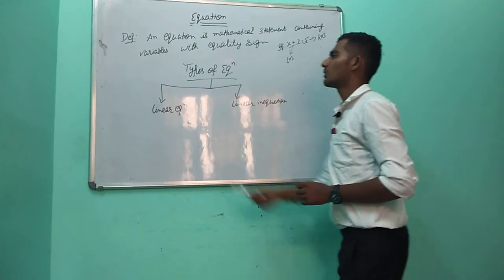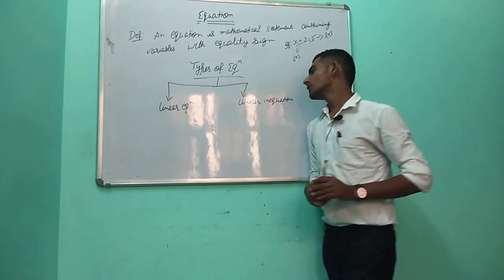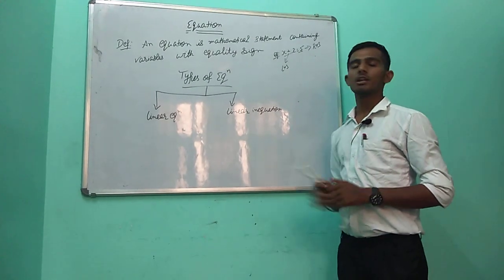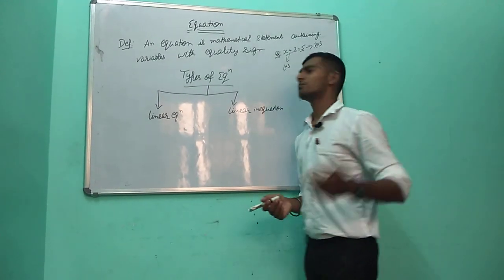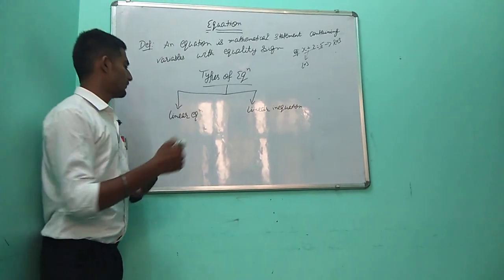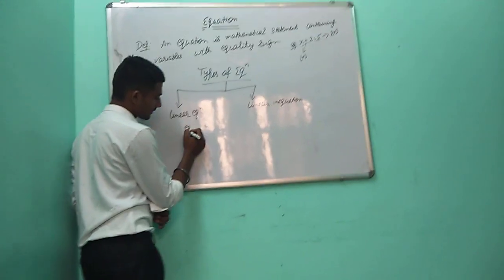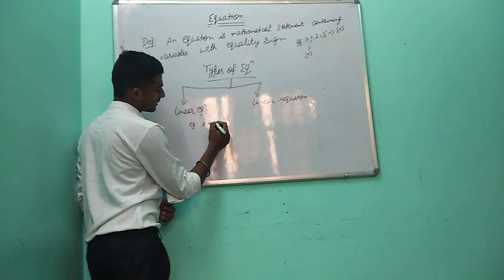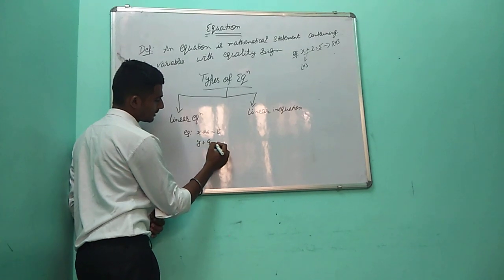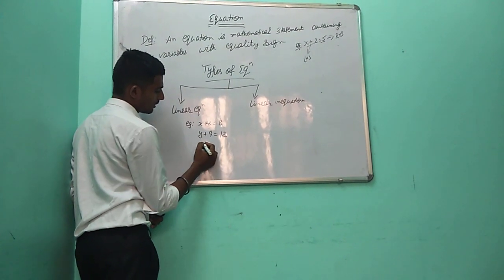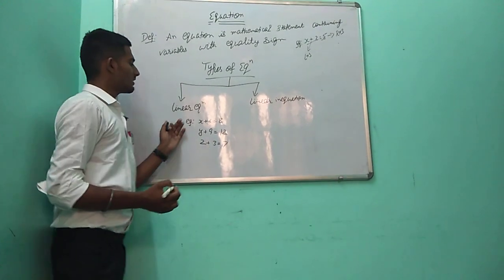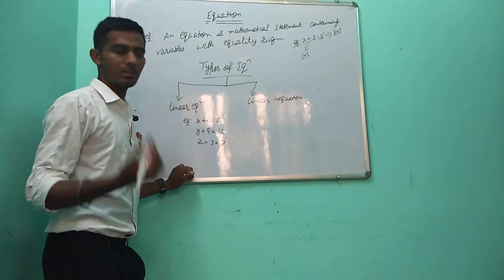In math we are discussing about types of equations. Generally, equations are of two types. The first is linear equations, which we use in all mathematics and sciences. In linear equations, for example: x plus 6 is equal to 8, y plus 9 is equal to 12, z plus 3 is equal to 7. All of these are linear equations.